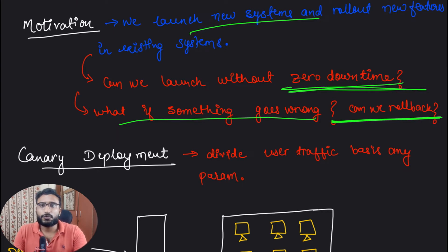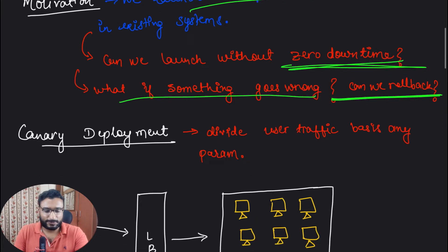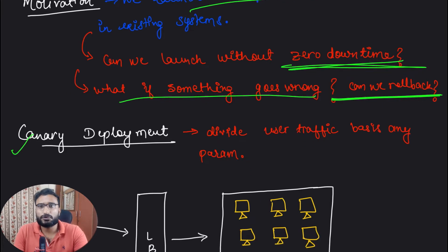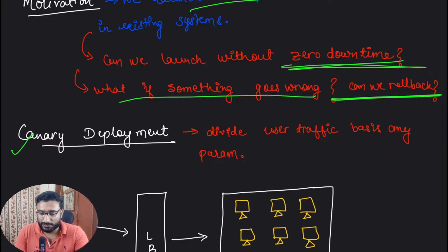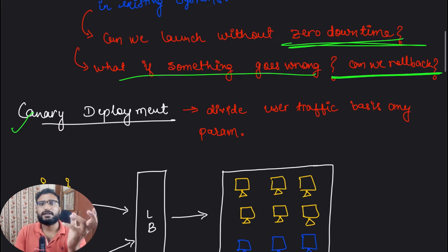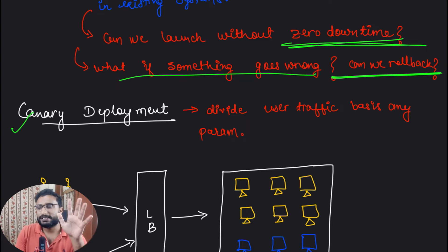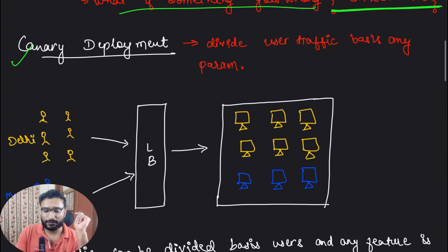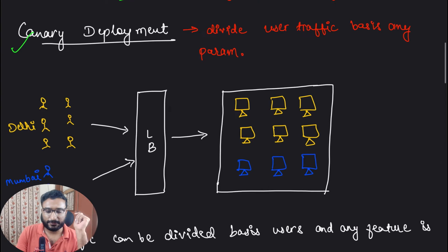So how are we trying to deploy changes to production? There are two ways: the first one is Canary deployment and the other is Blue-Green deployment. Let's discuss them one by one. For Canary deployment, what we are trying to do is divide the traffic into two groups — there can be more groups, but let's say two.